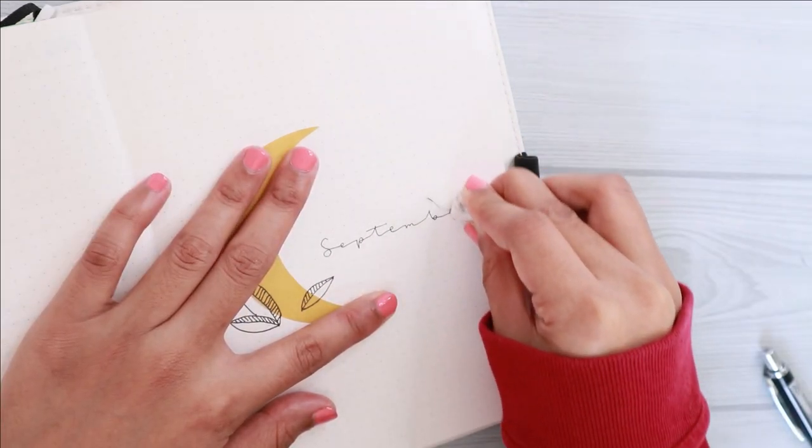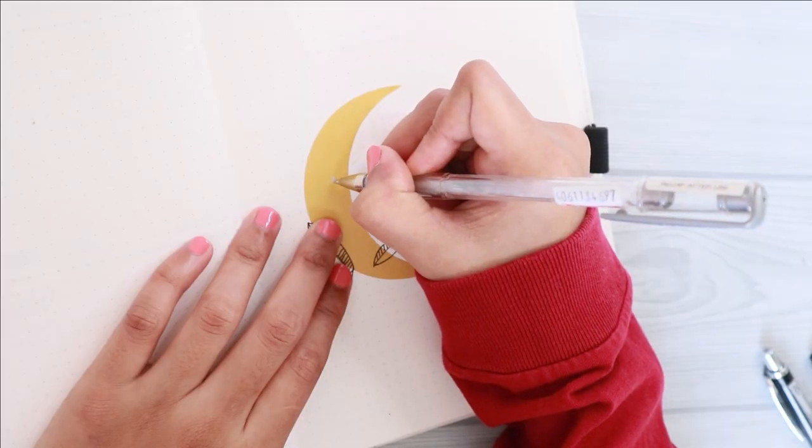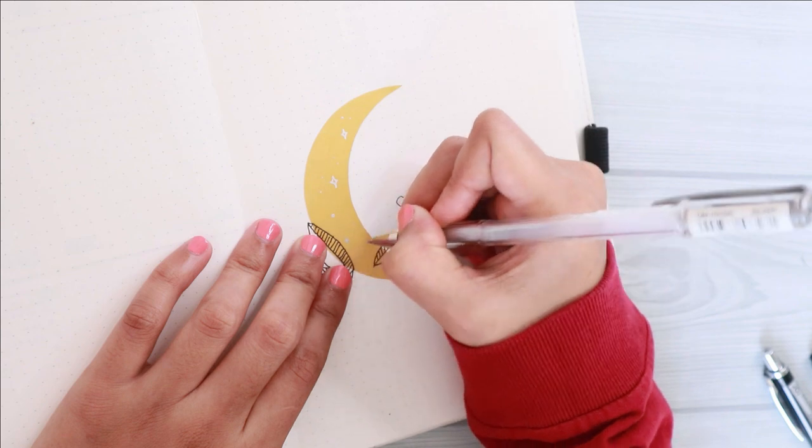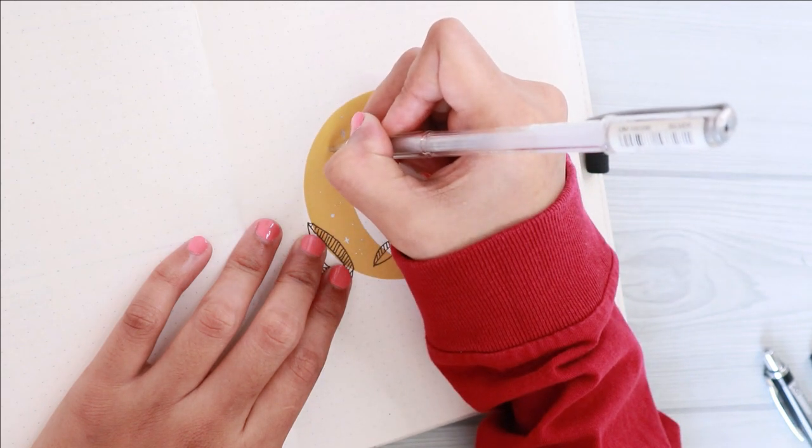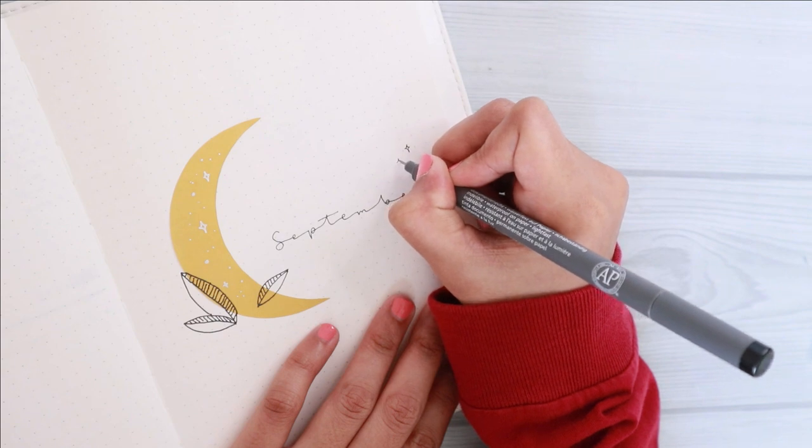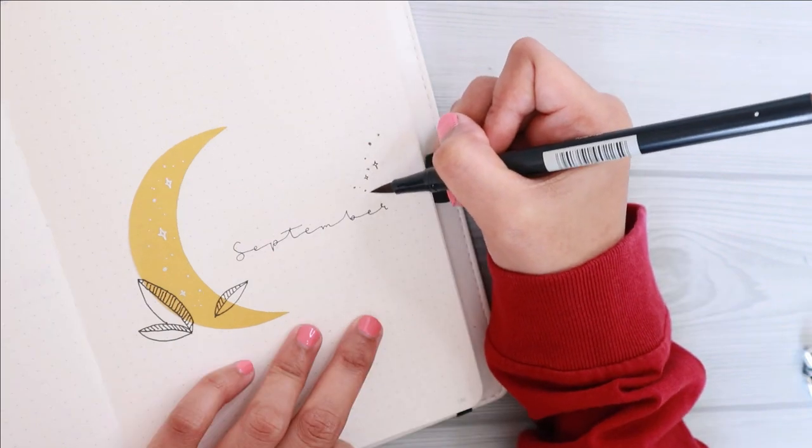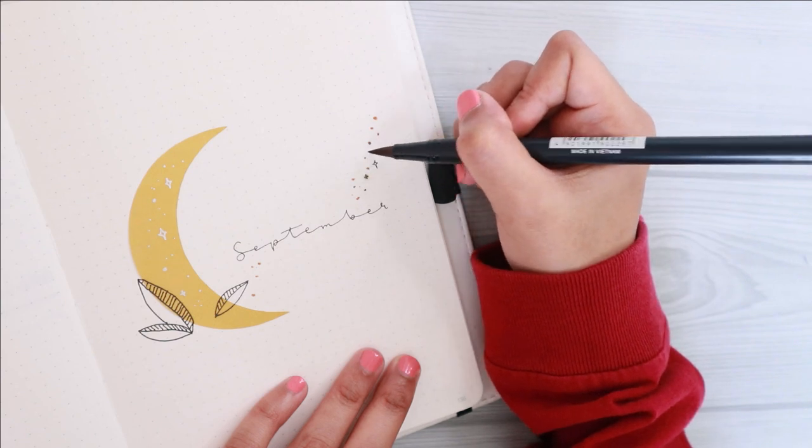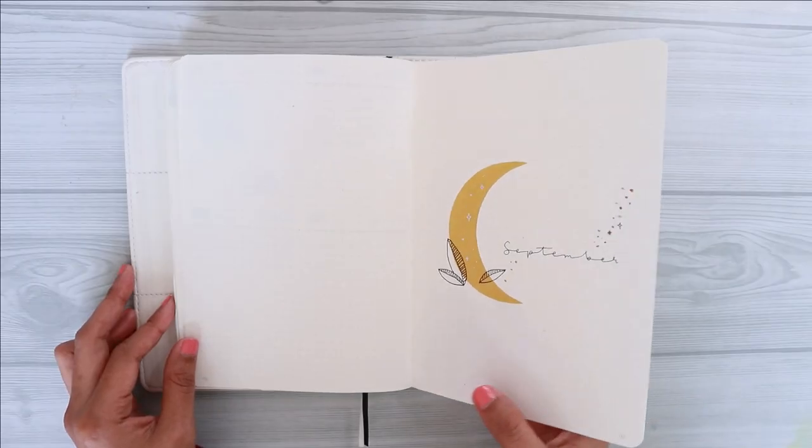So for this cover page, I just sketched the moon with some circle object, cut it out, and pasted it on my journal. After that, I just went ahead and drew some leaves to complete the whole decoration. It's a very simple cover page, but I really like how it turned out.